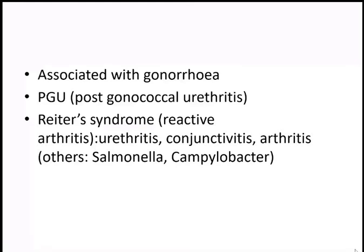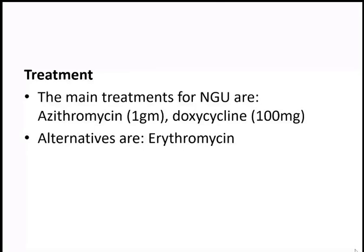The drug of choice for gonorrhea is cephalosporin, but doxycycline can target both gonorrhea and chlamydia urethritis simultaneously. Sometimes chlamydia urethritis can occur as part of Reiter's syndrome, which is a triad of urethritis, conjunctivitis, and arthritis. Treatment for non-gonococcal urethritis includes doxycycline, azithromycin, or erythromycin — these are antibiotics effective for atypical infections.